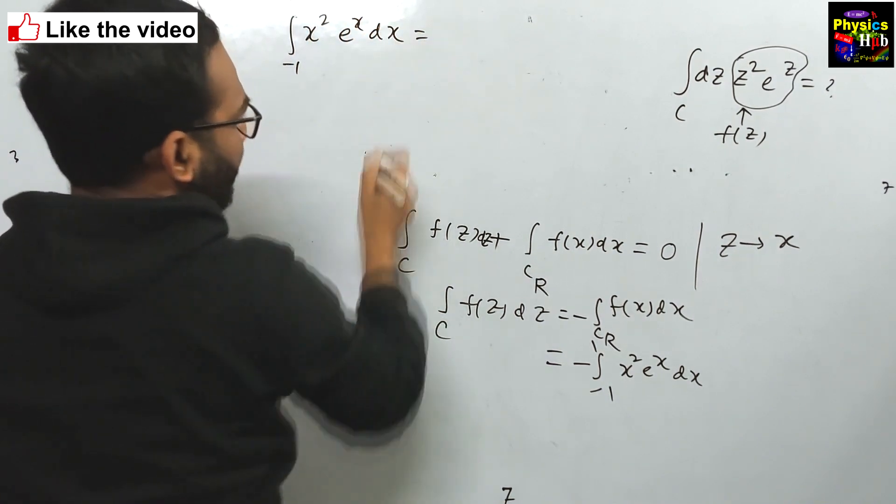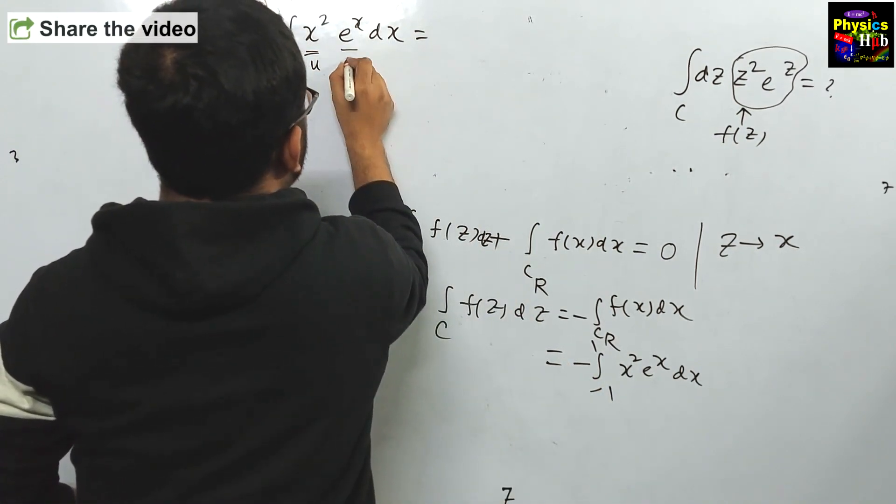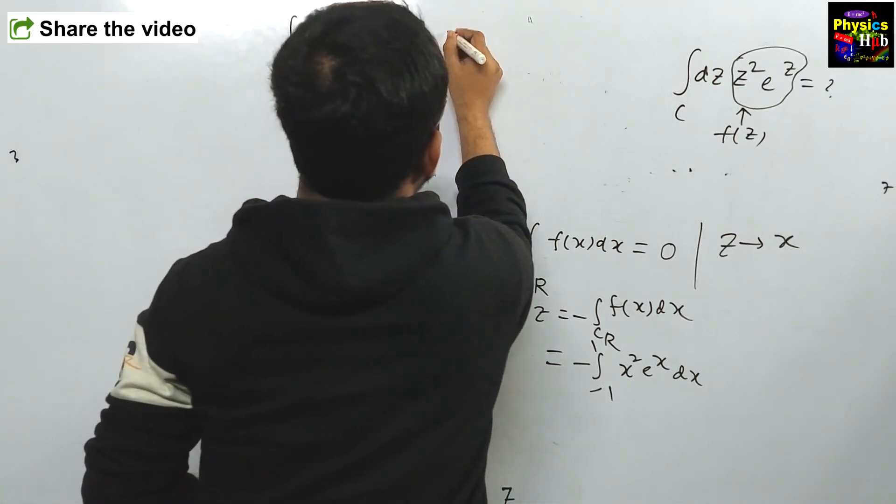Firstly, we will calculate -1 to 1, x² e^x dx. Then we will just add a minus sign there. uv, we are taking this portion as u and this portion as v.